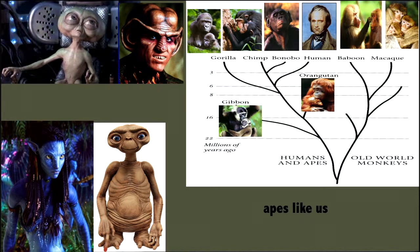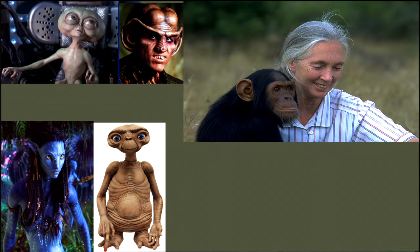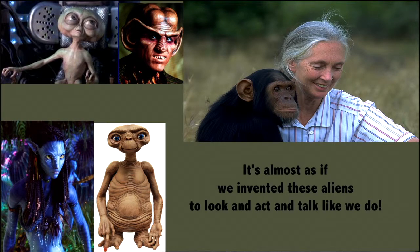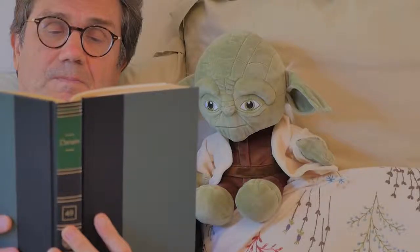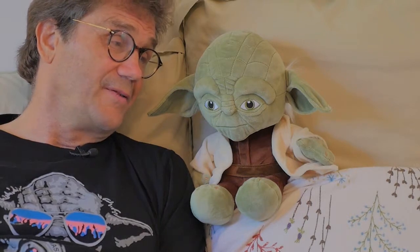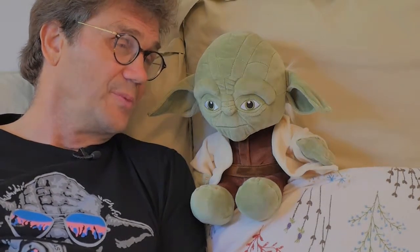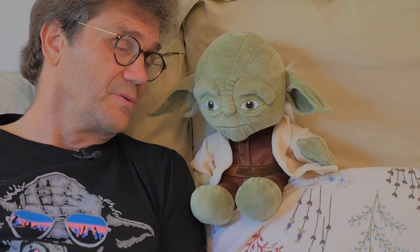Let's look more closely at our closest relative. This is Jane Goodall, a human being, sitting next to a chimpanzee — our closest relative. When you compare Jane's face and the chimp's face with these alien faces, most aliens look like they're more closely related to humans than chimpanzees are. These aliens look like they're more closely related to us than our closest relative on Earth. It's almost as if we invented these aliens to look, act, and talk like we do — almost as if they are us. So Yoda, you and your alien friends seem to be more closely related to humans than even chimpanzees are. Either you're human, or we've made you in our image. What do you think?